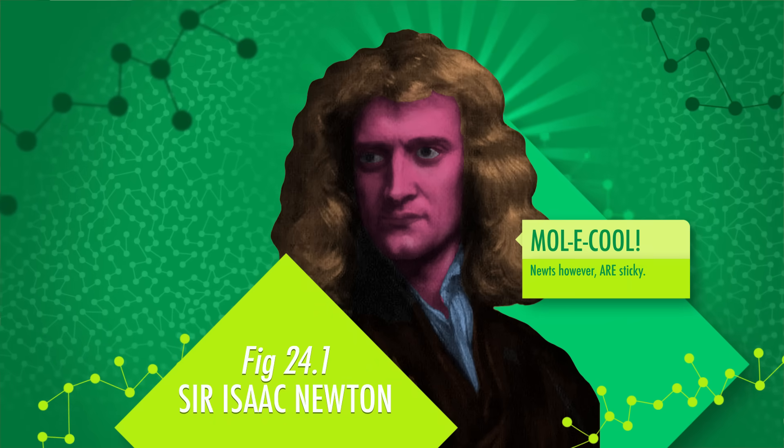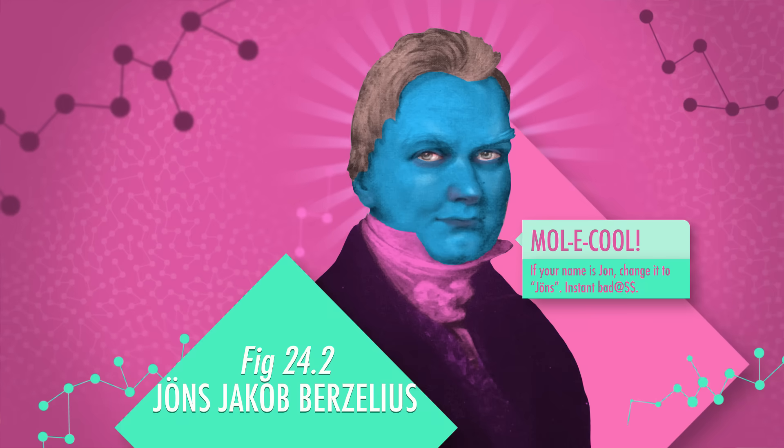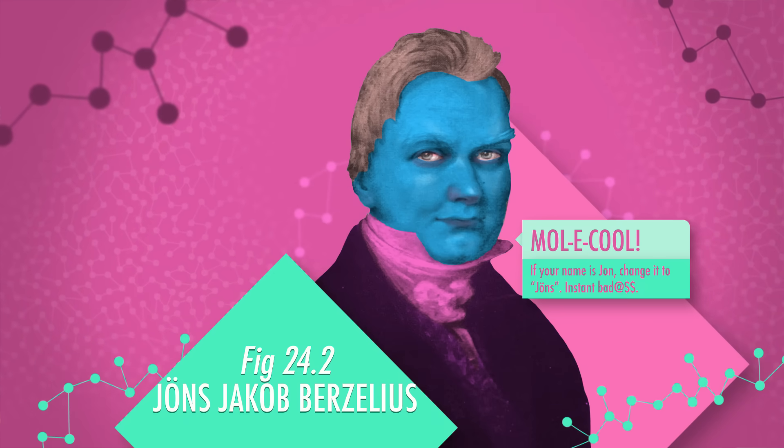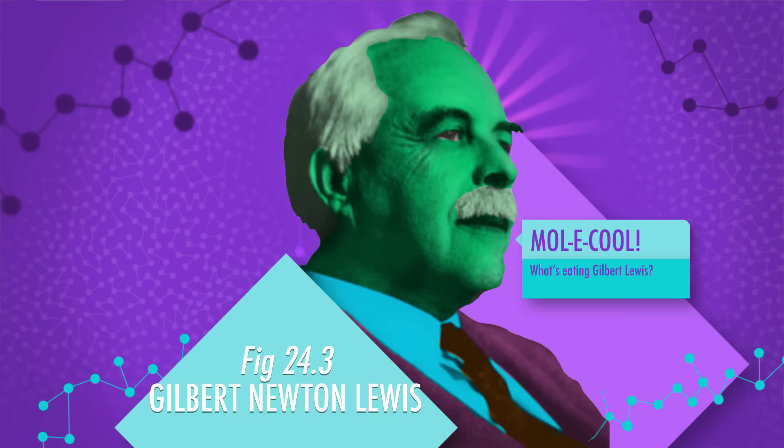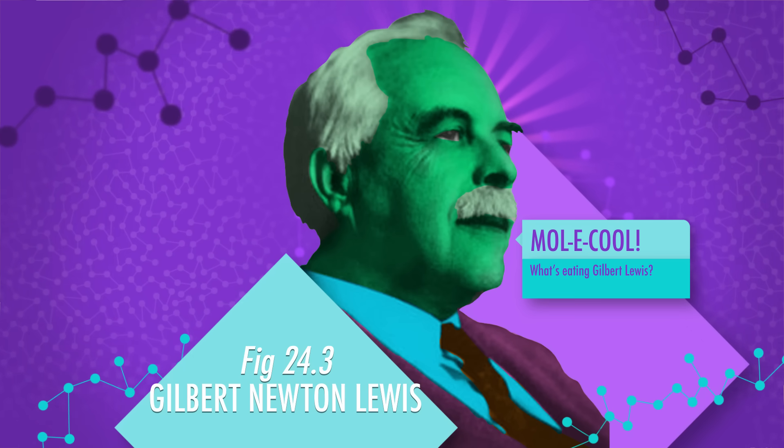Over centuries, the chemical bonding model has been updated as experimental results provided information about how the universe actually works. Early scientists including Isaac Newton thought that atoms combined because they were literally sticky, or because they had tiny little hooks on them, like a kind of velcro. In the 19th century, chemists like Berzelius discovered positive and negative charges associated with chemicals, and theorized this was the force holding molecules together — much better than the first model, but still not entirely accurate. Only after the discovery of electrons in the 1890s could chemists begin to understand the true nature of chemical bonds. Then in 1916, American chemist Gilbert Newton Lewis described a covalent bond as two atoms sharing electrons, and modern chemists still use this model as a simple way to represent chemical bonds on paper.